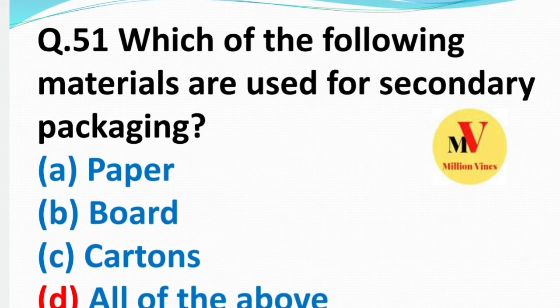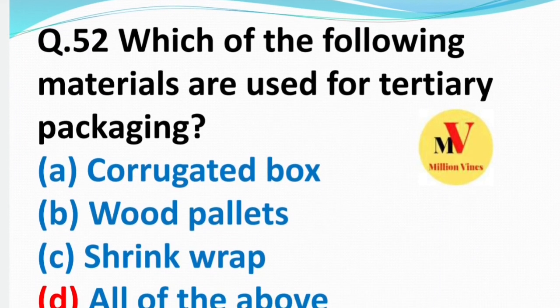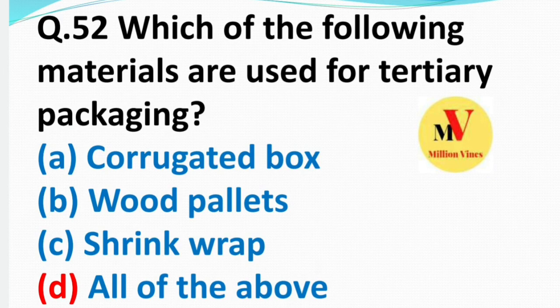Which of the following materials are used for secondary packaging? The right answer is pellets or shrink wrap — right answer is all of the above.